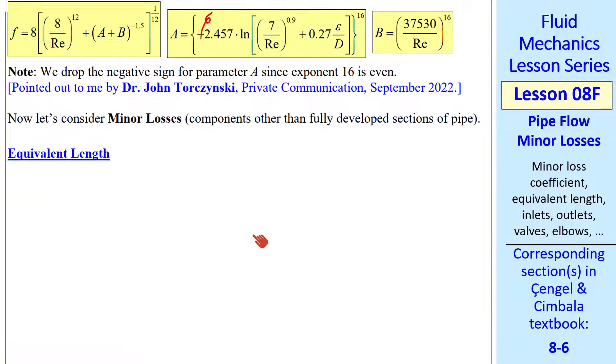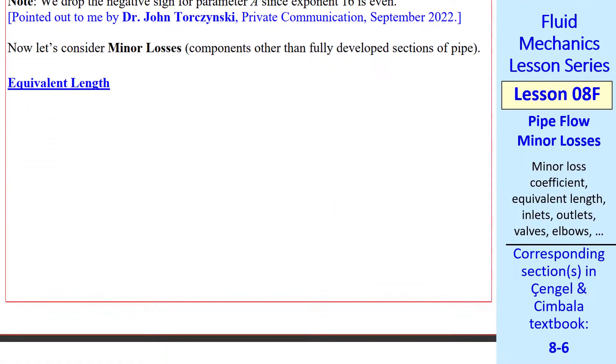Now let's consider minor losses, which are components other than fully developed sections of pipe. There are two ways to consider minor losses.